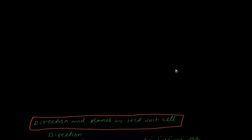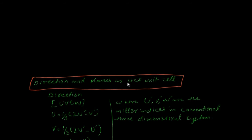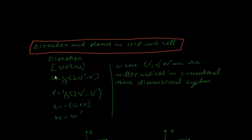Welcome friends. Today we will learn about how to indicate the direction and plane in the HCP unit cell. Directions in an HCP unit cell are indicated by four indices: u, v, t, and w.